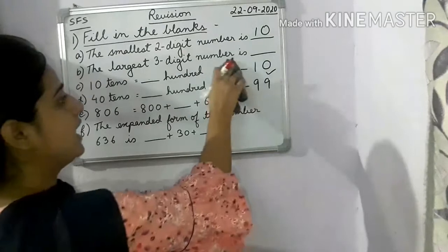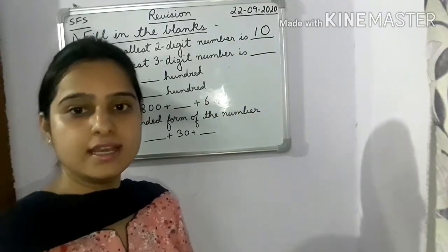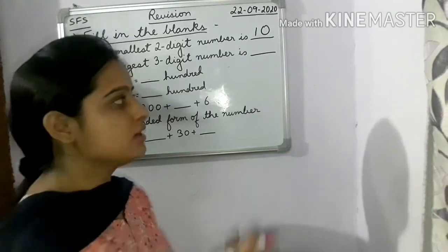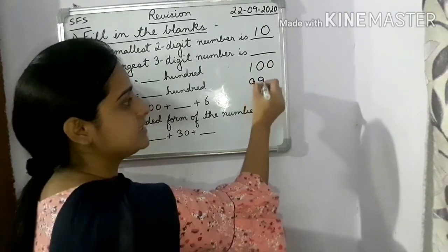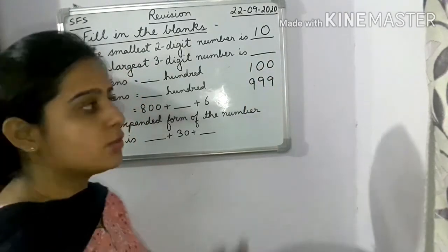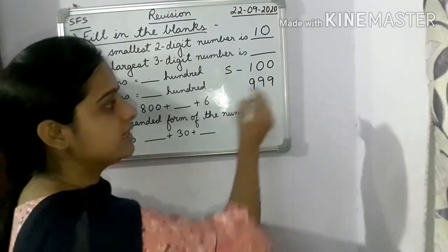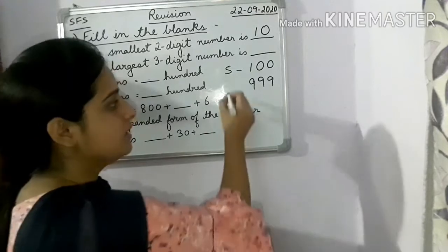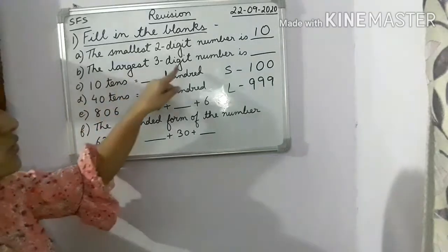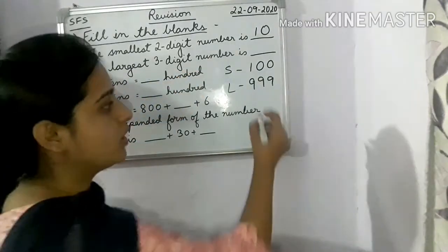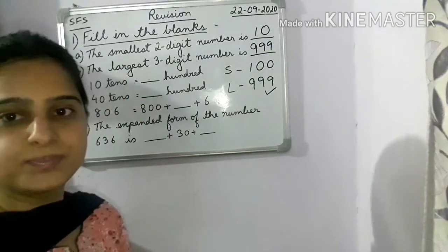B: the largest three-digit number is. Up to 99 are your two-digit numbers, so three-digit numbers start from 100 and end at 999. We can say that 100 is the smallest three-digit number and 999 is the largest three-digit number. The question asks for the largest three-digit number, so the answer is 999.